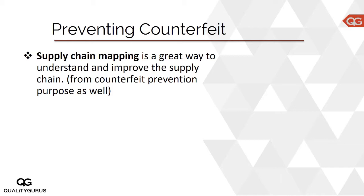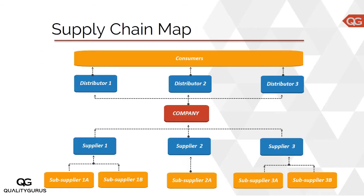Let's look at this tool on the next slide and see how it works. Here is a very simple example of a supply chain map. The company is at the center, and it lists down all the suppliers it has — supplier one, supplier two, and supplier three. Below the suppliers, you also need to go to the next level, because no supplier makes everything you need.